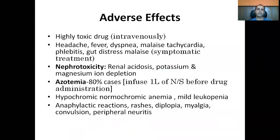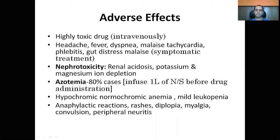Amphotericin B is one of the highly toxic drugs. When given intravenously, it may cause headache, fever, dyspnea, malaise, tachycardia, cellitis, and GI distress. Nephrotoxicity is the most common problem — renal acidosis, potassium and magnesium ion depletion, and azotemia is seen in almost 80% of cases. Before administering amphotericin B, you need to infuse one liter of normal saline. Hypochromic normochromic anemia, mild leukopenia, anaphylactic reactions, rashes, diplopia, myalgia, convulsions, and peripheral neuritis have all been noted.